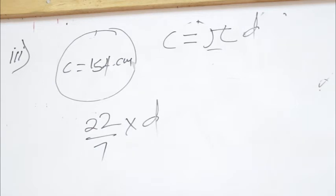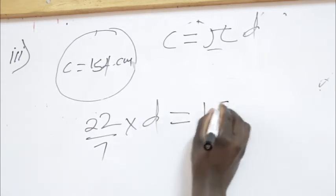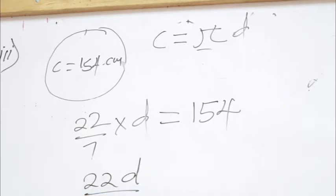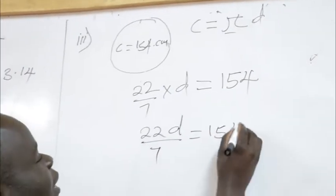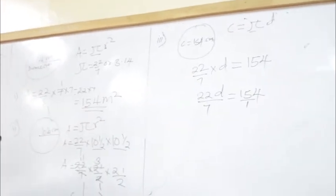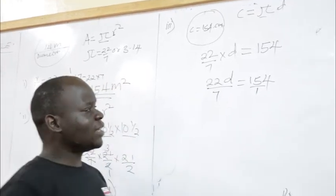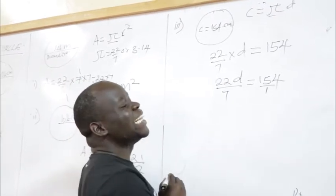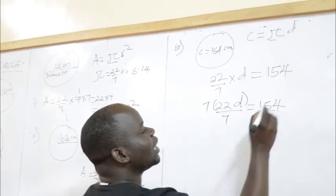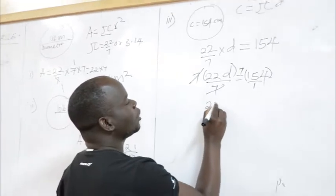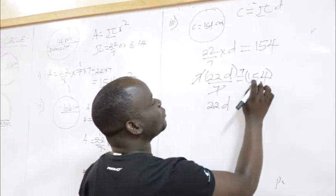We are given circumference = 154. Using Circumference = 22/7 × D = 154, we get 22D/7 = 154. Finding the LCM of 7 and 1, which is 7, and multiplying both sides by 7: 22D = 7 × 154 = 1078.